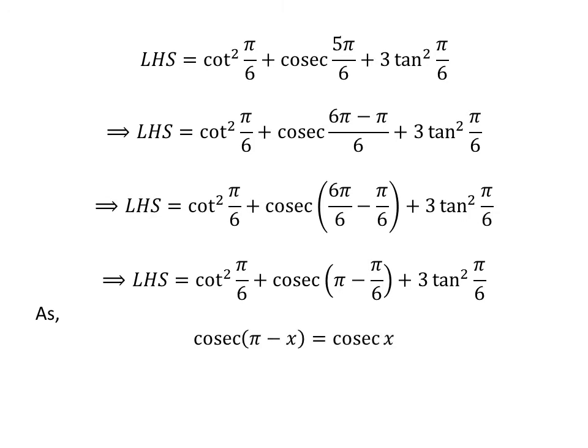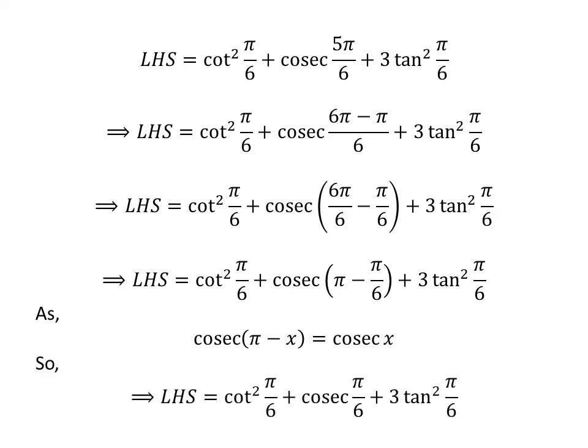As we know, cosecant of (π - x) is equal to cosecant of x. The proof of this identity is given in the video appearing in the upper right corner, and the link is also given in the description. Applying this identity gives us: LHS = cot²(π/6) + csc(π/6) + 3tan²(π/6).